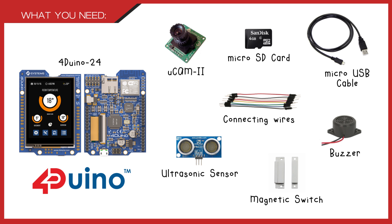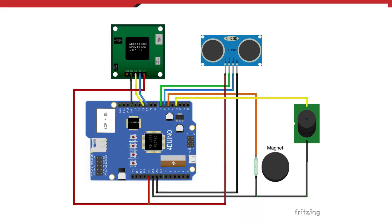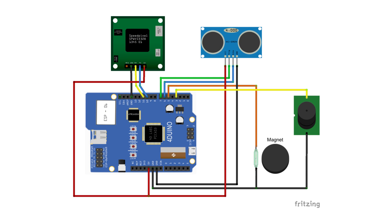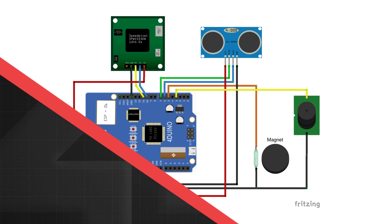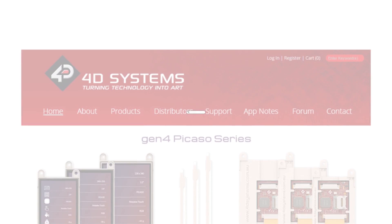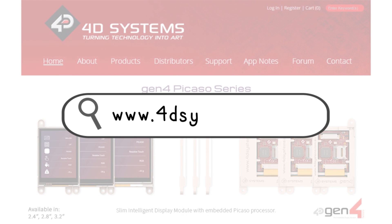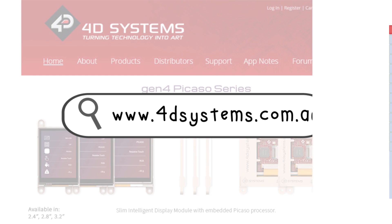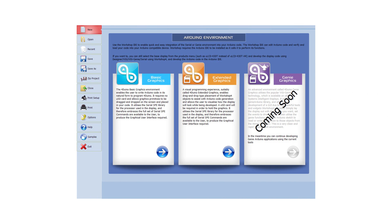Connect the following components as shown in this fritzing diagram. You can make your own code or download the link below. Open the program using the Workshop 4 IDE.